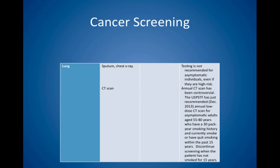For lung cancer, sputum and chest X-ray screening is not recommended for asymptomatic individuals, even if they are high risk. Annual CT scan has been a controversial topic, but in December 2013 the United States Preventive Services Task Force recommended annual low-dose CT scanning for asymptomatic adults between the ages of 55 and 80 years who have a 30-pack year smoking history and currently smoke or have quit smoking within the past 15 years. The CT scanning can be discontinued when the patient has not smoked for over 15 years.